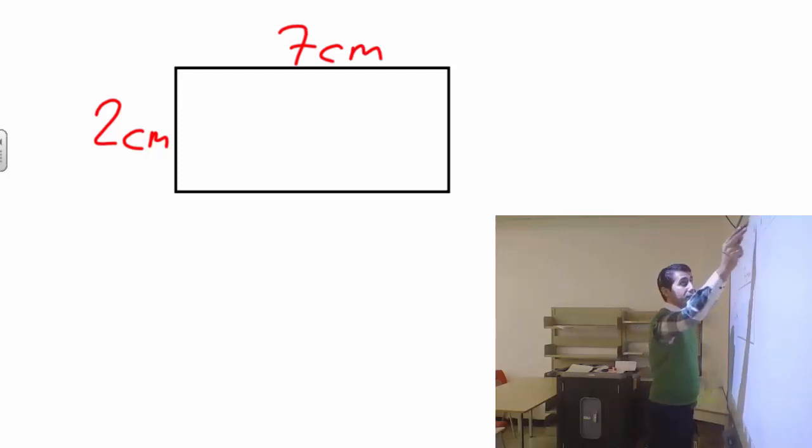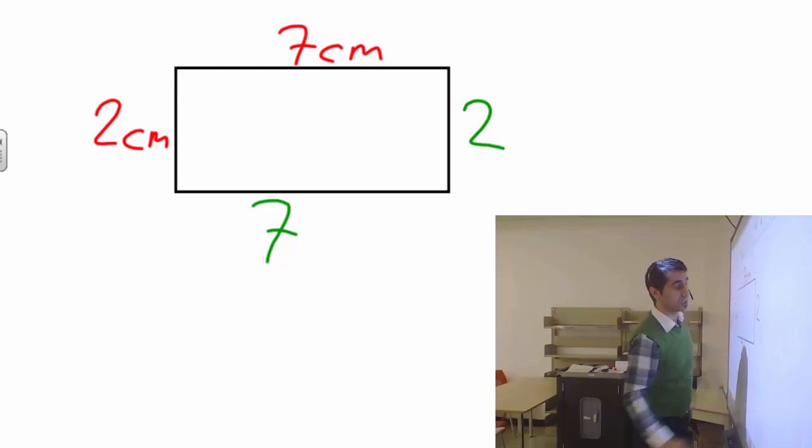We know that these two sides are the same, so that's supposed to be 7 as well. These two sides are the same, so that's supposed to be 2 as well. All we have to do is put all the sides together.